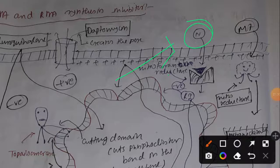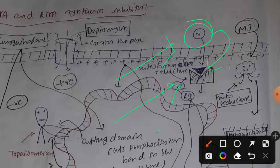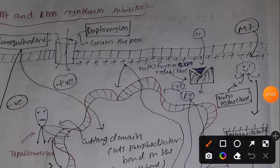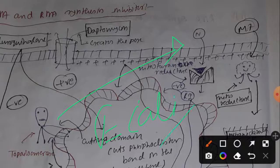Nitrofurantoin binds with nitrofurantoin reductase, which causes its conversion into a reactive intermediate that inhibits both DNA, RNA, and protein synthesis. Nitrofurantoin is useful for both gram-positive and gram-negative bacteria and is mainly used for UTI treatment caused by E. coli and Enterococci.